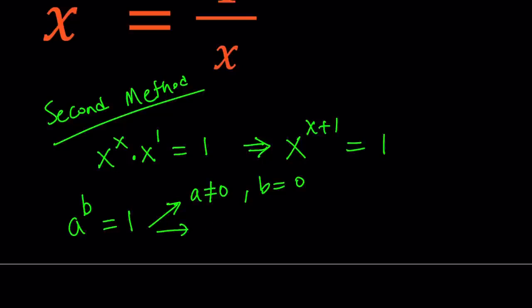Or we have a equals 1. In this case, if the base is 1, the exponent doesn't matter. So we just need b to be a real number. And then for the third case, we can have a equals negative 1 and b equals even. So those are the three cases that we need to check. Let's go ahead and check each one.